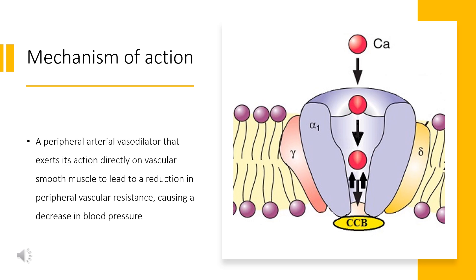Diltiazem inhibits the influx of extracellular calcium across the myocardial and vascular smooth muscle cell membranes. In isolated human atrial and ventricular myocardium, diltiazem suppressed tension over the range of membrane potentials associated with calcium channel activity, but had little effect on the tension-voltage relations at more positive potentials. This effect is mediated by the voltage-dependent block of L-type calcium channels and inhibition of calcium ion release from the ER stores, without altering the sodium-calcium-coupled transport or calcium sensitivity of myofilaments. Through inhibition of inward calcium current, diltiazem exerts a direct inotropic and energy-sparing effect on the myocardium. Diltiazem slows atrioventricular nodal conduction due to its ability to impede slow channel function.